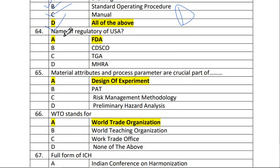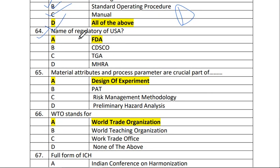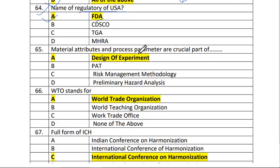Next is question number 64. Name of the regulatory authority of the United States of America. The answer is A, FDA — Food and Drug Administration.